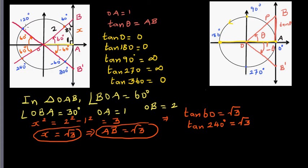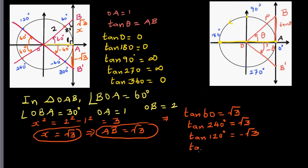When it hits 120 degrees, if you join this point to the tangent you get AB'. Using symmetry, if AB = √3, then this length is -√3. That's why tan(120°) = -√3. Similarly, tan(300°) = -√3.